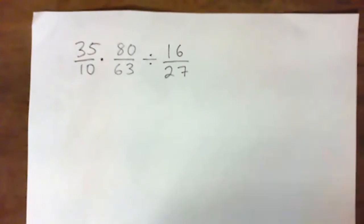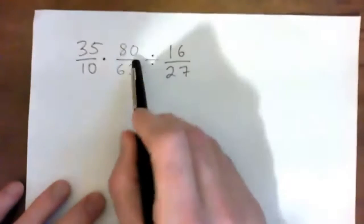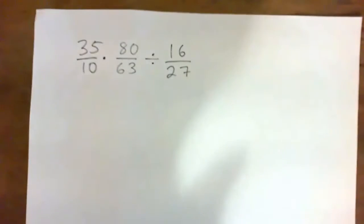Alright, so we got 35 over 10 times 80 over 63 divided by 16 over 27, right?